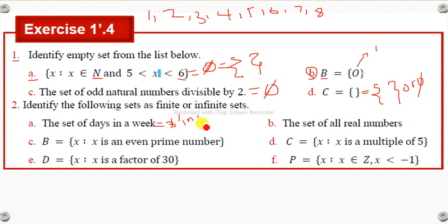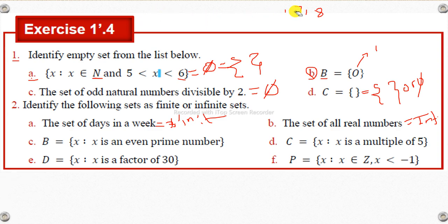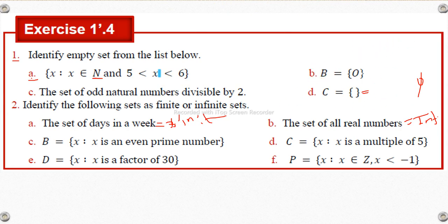Now, let's see if this is finite or infinite. Let B be equal to {x : x is an even prime number}. Even prime numbers — wow, even prime number. Let me think about that.